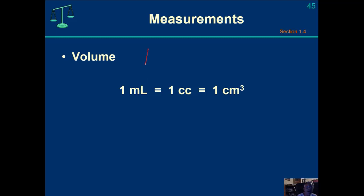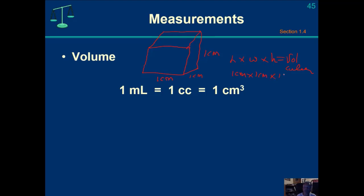If I take a cube that is one centimeter on each side — one centimeter of length, one centimeter of width, and one centimeter of height — and I multiply length times width times height, that's how you get the volume of a cube. This gives me one centimeter times one centimeter times one centimeter, which equals one centimeter cubed. And one cubed is just one, so that is one cubic centimeter.